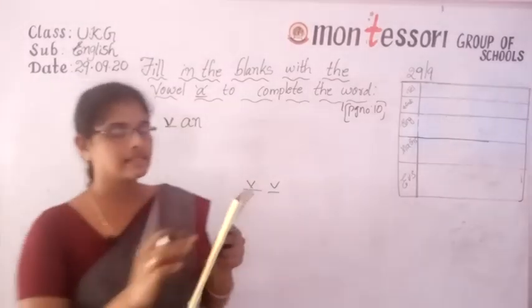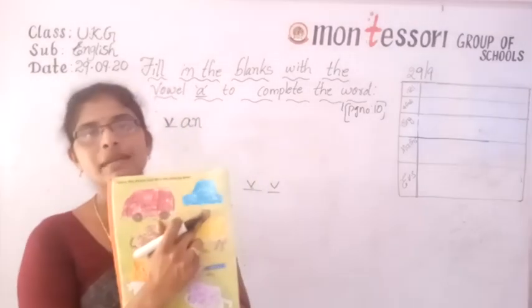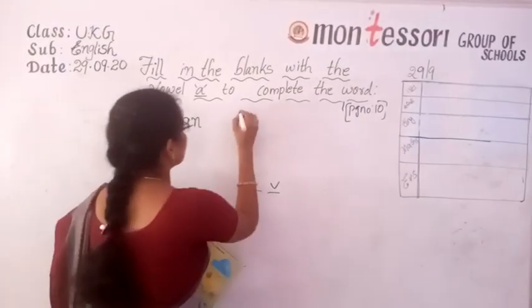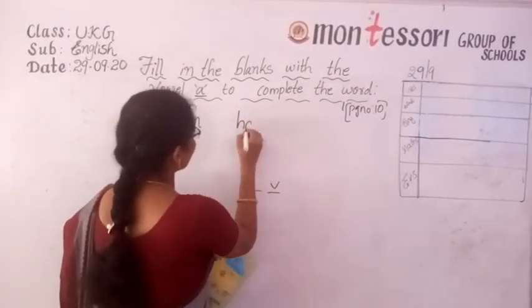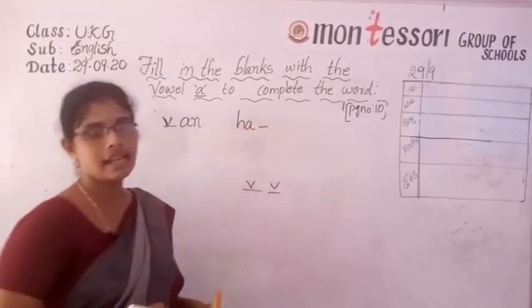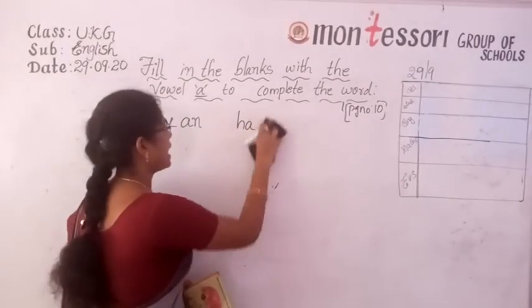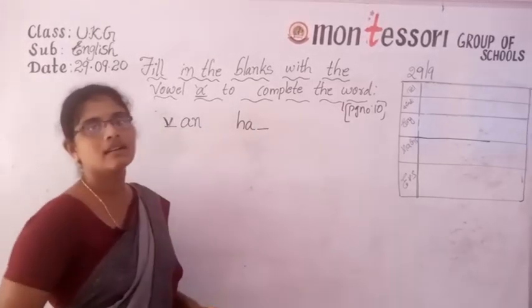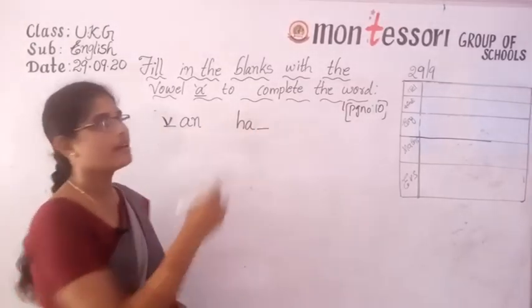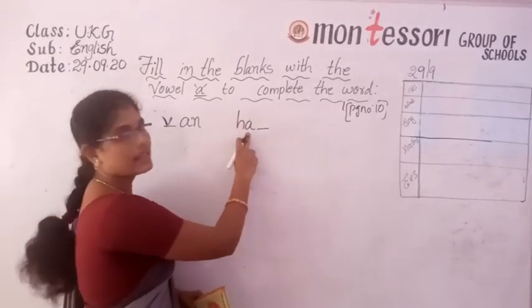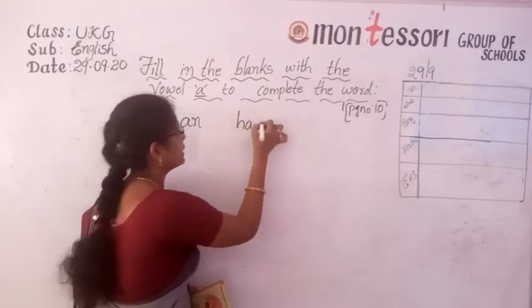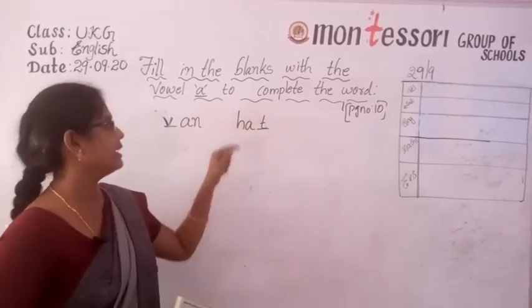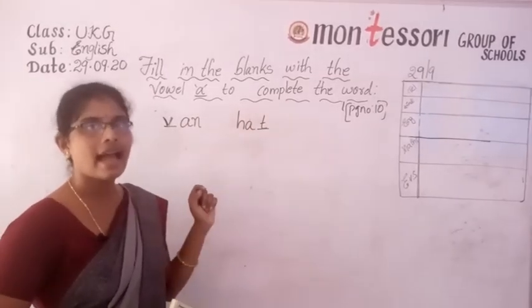Now next picture. What is this picture? Hat. What did they give? H, A, dash. What is the spelling of hat? H-A-T. Not G — we have to write T. H-A-T, hat.